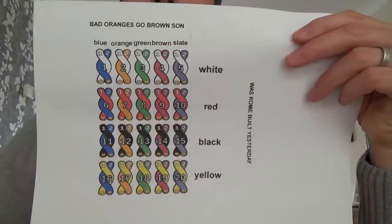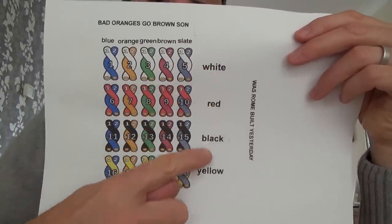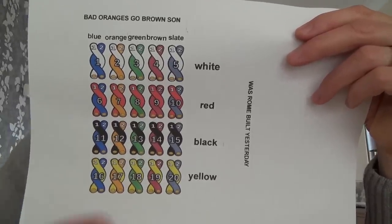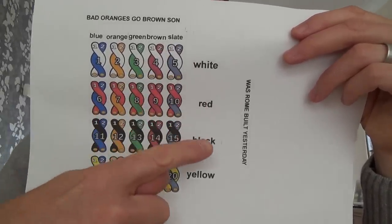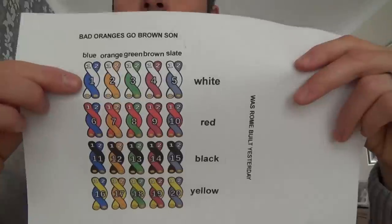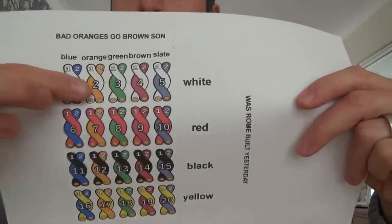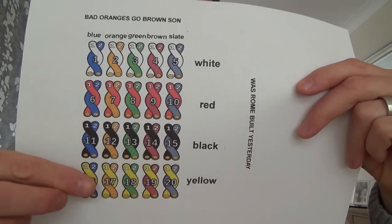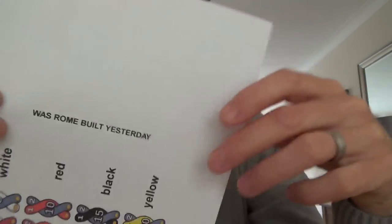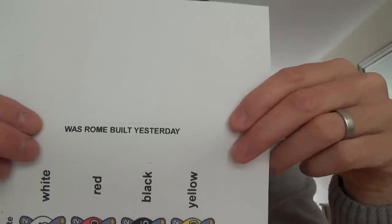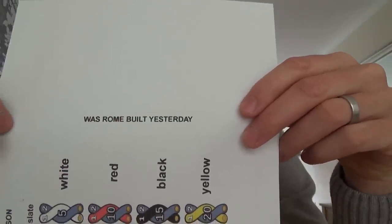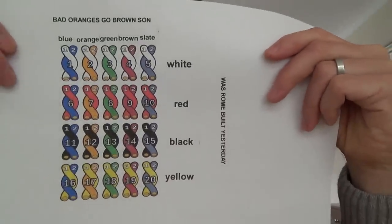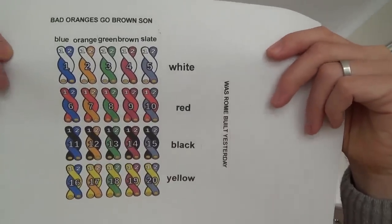Now, to remember the color code going down here, this is on the CW1308. So this is commonly internal cabling. It would be white, red, black, and yellow. So I used to remember it as was Rome built yesterday for white, red, black, yellow. You can remember it any which way you want, but once you get your head around this, then it's quite straightforward.